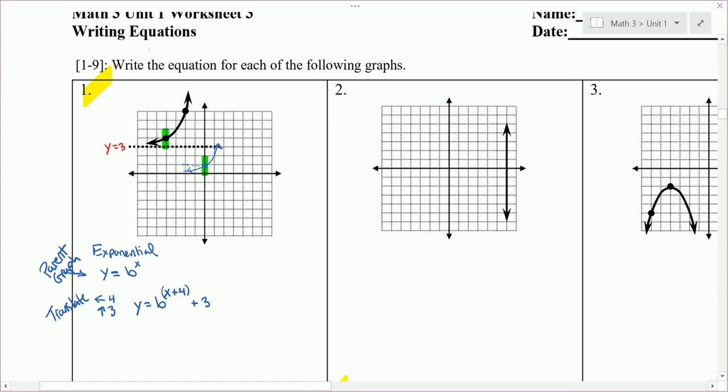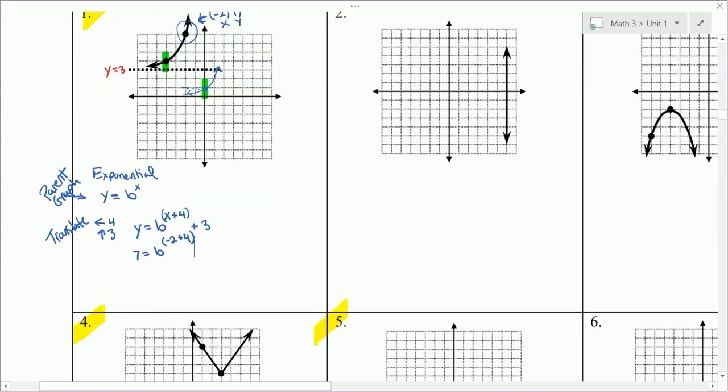We're almost done with writing this equation. All we need to find out now is what is b. Find the coordinate of that point, which is negative 2, 7, and plug in negative 2 for x and 7 for y and then solve for b. We get 7 equals b to the power of negative 2 plus 4 plus 3. We'll work with negative 2 plus 4, so we get 7 equals b squared plus 3. Subtract 3 from both sides and we end up with 4 equals b squared.